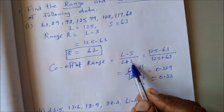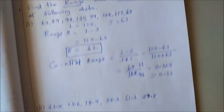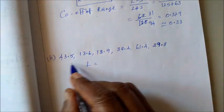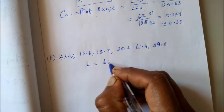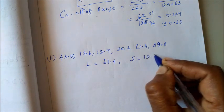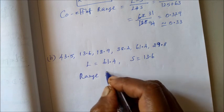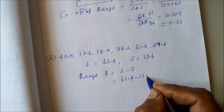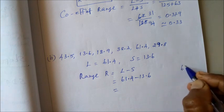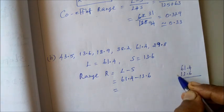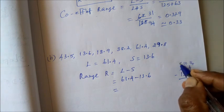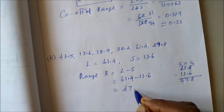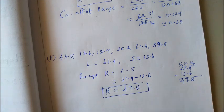Second problem. Range R equals what is the formula, equal to L minus S, which equals 61.4 minus 13.6. So subtract, that gives us 47.8. This is our R.